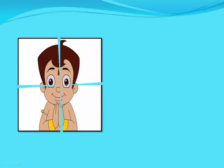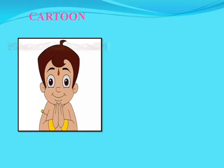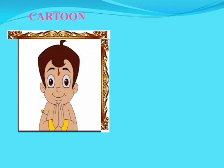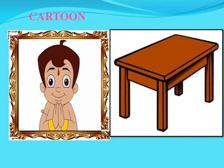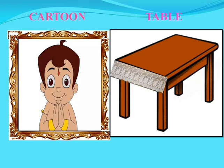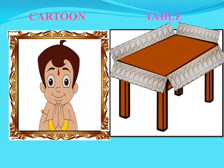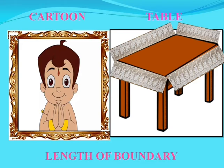Let's take another example. This is a picture of a cartoon. We want to frame this picture. And here is another example — a table. If we want to fix a lace on the table cover, then what is to be found out? The length of boundary. So children, length of boundary is also called perimeter.